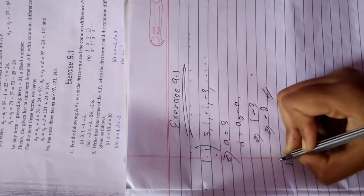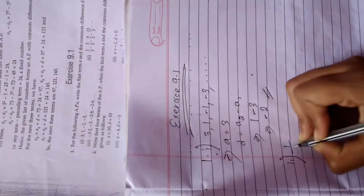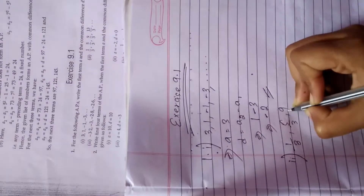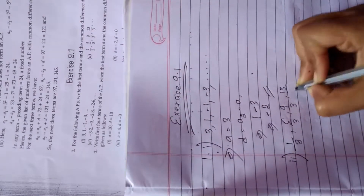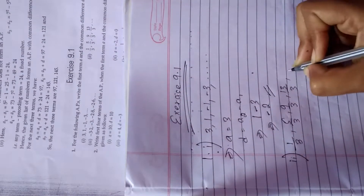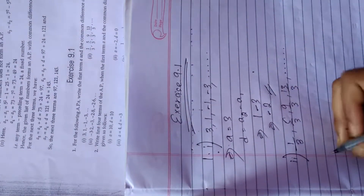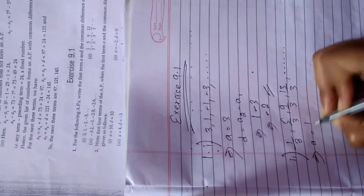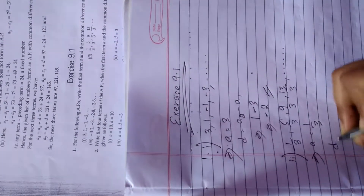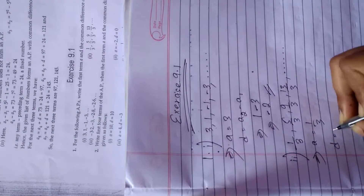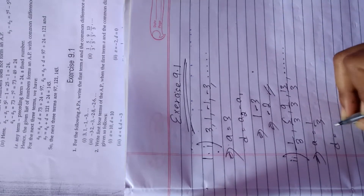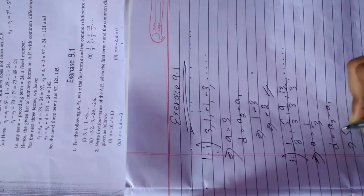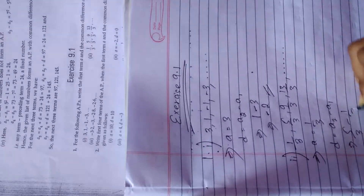Number 2: 1/3, 5/3, 9/3, 13/3, ... So a is 1/3, and d — common difference — is a2 minus a1, that is 5/3 minus 1/3.